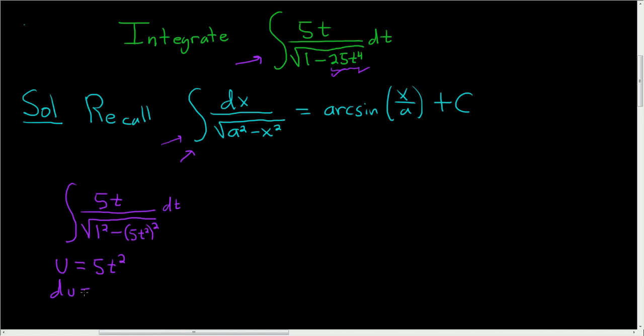So du, let's see, 2 times 5 is 10, so you get 10t dt. Now here we have 5t dt, so what we can do is we can divide both sides by 2. So divide this by 2, and divide this by 2, and that gives us 1 half du equals 5t dt.